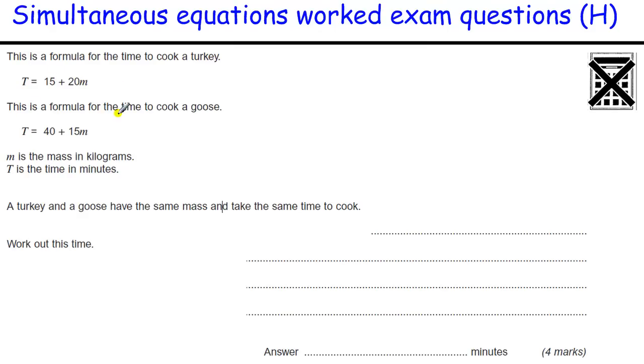So we've got a formula for a turkey and a goose. A turkey and a goose have the same mass and the same cooking time. So these two things will be the same. So if the time is the same, then we can say 15 plus 20m equals 40 plus 15m. Now, quite often you can, if you play around with the numbers, get the answer very quickly just by guessing, but much better to actually work it out.